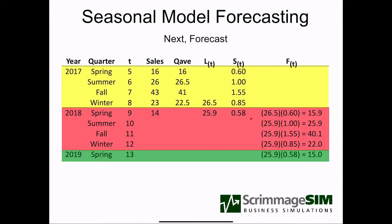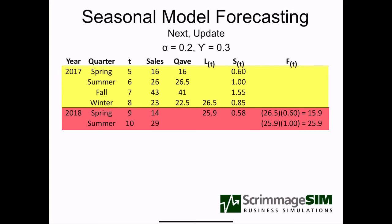Looking at our new forecasts, we use the new level with the same seasonal factors for summer, fall, and winter. But in spring of 2019, we use our new seasonal factor. Once summer 2018 is over, we find out that sales were actually 29, whereas we forecast 25.9 — we under-forecast sales. So we're going to adjust our level up, and also make an adjustment to the summer seasonal factor. It may be that the overall sales level has shifted, or it may be that summer has a greater impact on sales — we're not sure which, so we make a small adjustment to both.